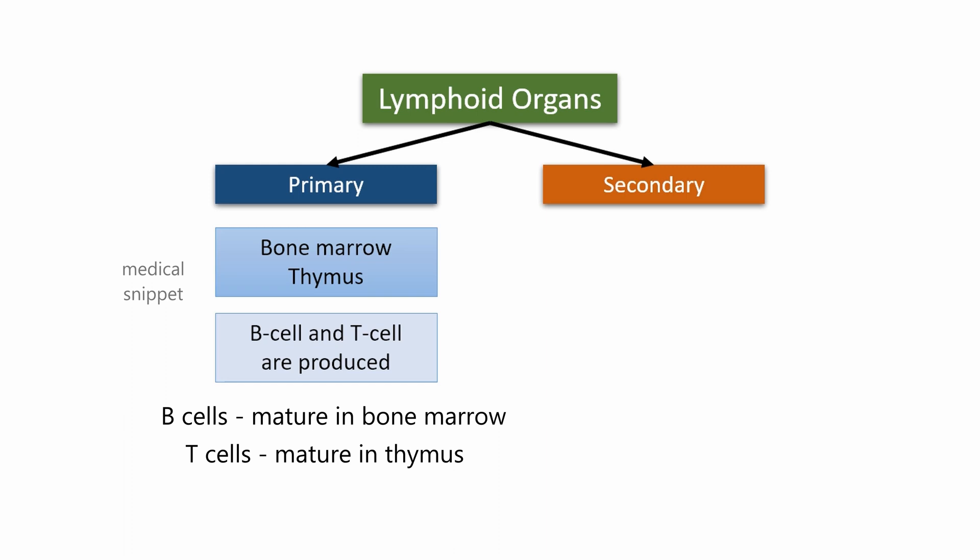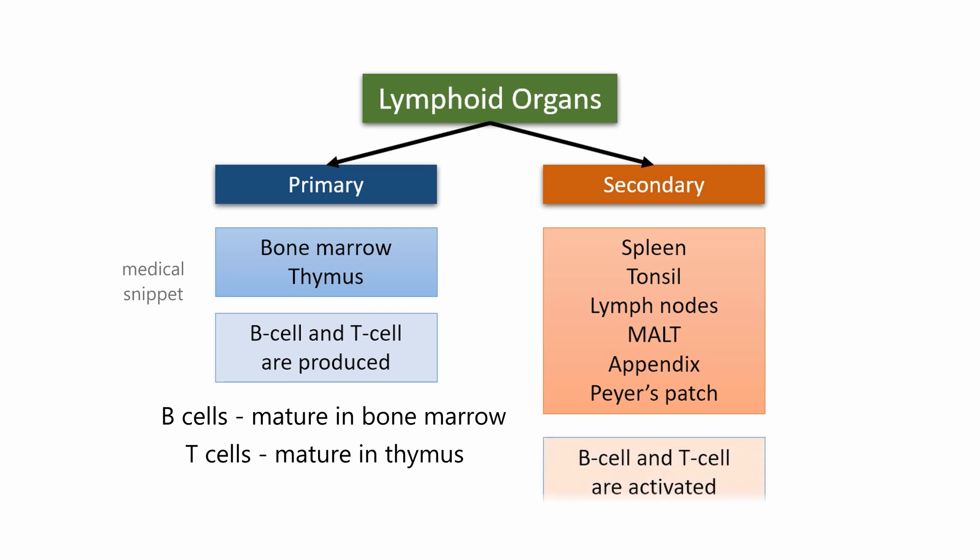Secondary lymphoid organs are spleen, tonsil, lymph nodes, mucosa-associated lymphoid tissue called MALT, appendix, and Peyer's patch of small intestine. After the maturation of lymphocytes in the primary lymphoid organ, lymphocytes relocate to these secondary lymphoid organs, where they are activated by antigens and fight against the germs and foreign substances.